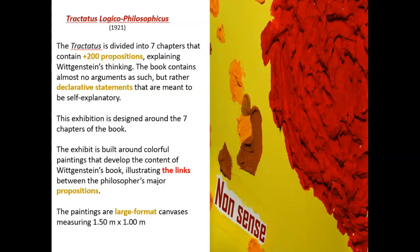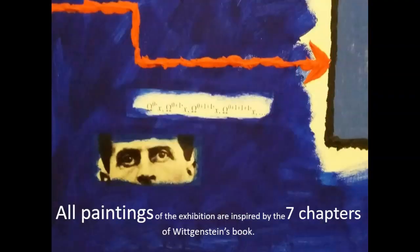We're talking about large format paintings. We have used canvases measuring 150 by 1 meters. All paintings of the exhibition are inspired by the seven chapters of Wittgenstein's book, and all contain some very personal elements of Wittgenstein and some personal elements about the artist, as we will see in the following photographs.